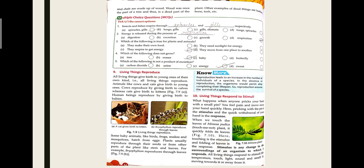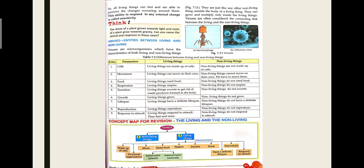A stimulus is any change in the surroundings of an organism to which it responds. Stimuli include temperature, touch, light, sound, and smell. All living things are able to perceive changes occurring around them. This ability to respond to external changes is called sensitivity.